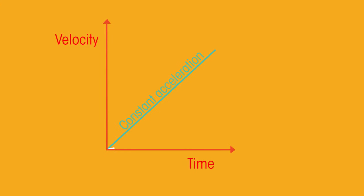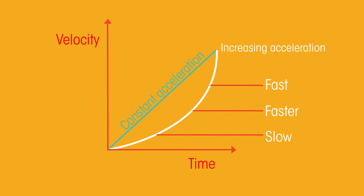But maybe you start off just giving a little gas and then once you're on the motorway you want to hit full speed sooner, so you accelerate faster. This would be a curved line like this on the graph.